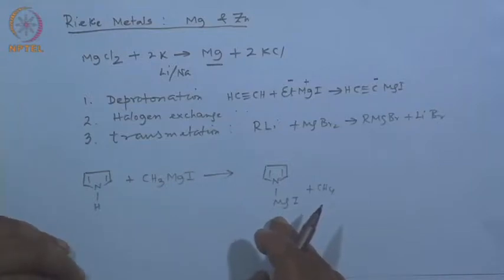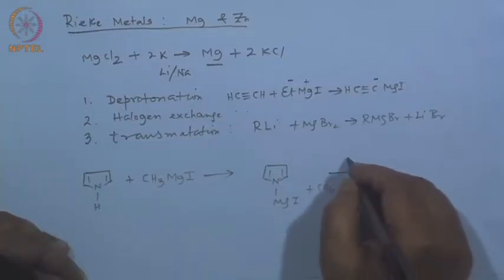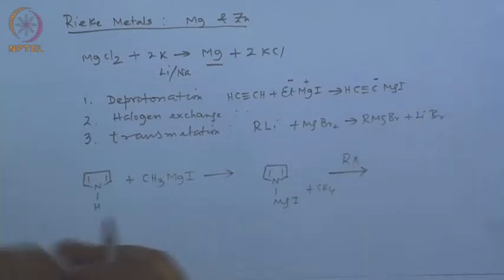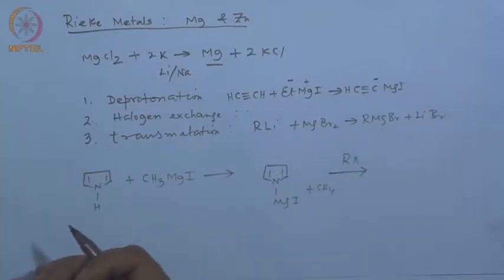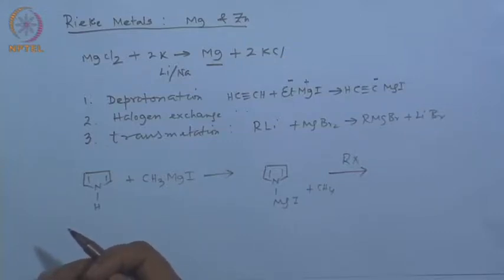If you want to do a reaction, for example with R-X, there are actually three different options: nitrogen can be alkylated, C2 can be alkylated, C3 can be alkylated. In fact, this is not a very good reaction for pyrrole chemistry with organomagnesium — all three different reaction products are known in the literature.